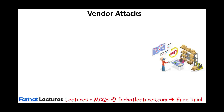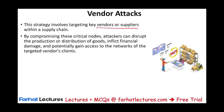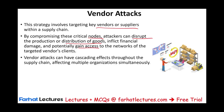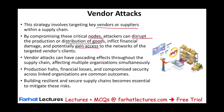You can also attack the vendor or supplier — a strategy targeting key vendors or suppliers within the supply chain. By compromising those critical nodes in the supply chain, attackers can disrupt production or distribution, inflict financial damage, and potentially gain access to the network of the targeted vendor's clients. Vendor attacks can have a cascading effect through the supply chain, affecting multiple organizations — halting production, causing financial losses, and compromising security across networks. It's important for companies to build resilient and secure supply chains to mitigate these risks, because your supply chain is part of your company.